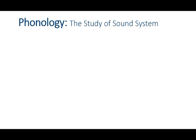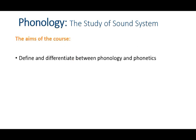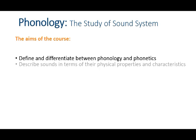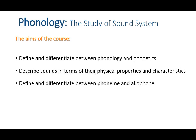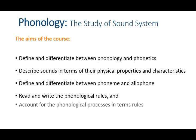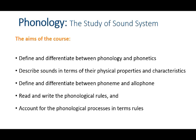This course has some objectives to achieve. By the end of this course you will be able to: define and differentiate between phonology and phonetics; describe sounds in terms of their physical properties and characteristics; define and differentiate between phoneme and allophone; read and write phonological rules; and account for phonological processes in terms of rules.